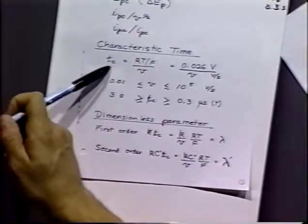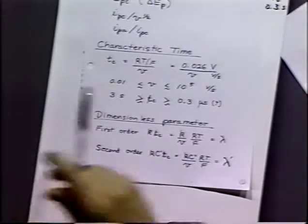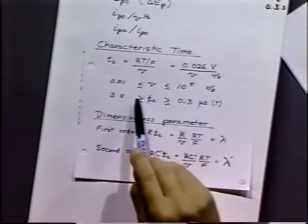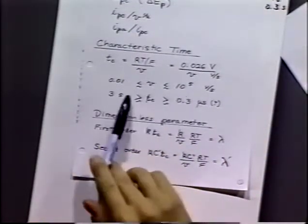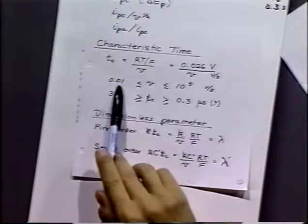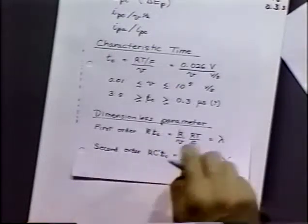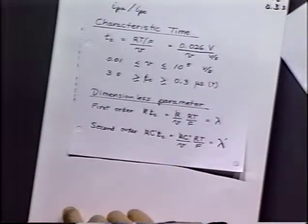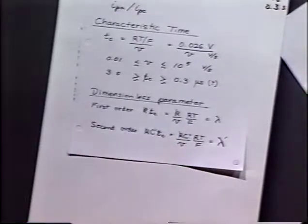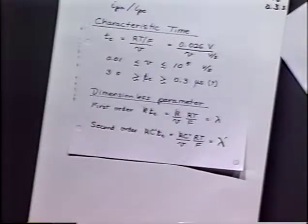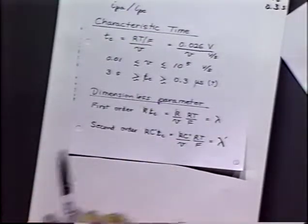Our characteristic time, T sub c, covers scan rates from about 10^-2 to 10^5 volts per second, corresponding to timescales of roughly 3 seconds down to 0.3 microseconds — possibly faster with careful experimental technique. That gives us about a 10^7-fold range in scan rate, or equivalently in time. Cyclic voltammetry alone provides a very wide accessible time window.